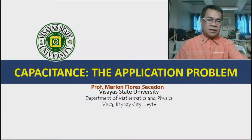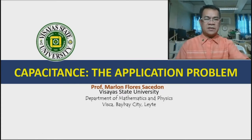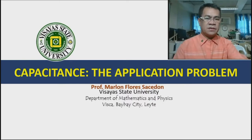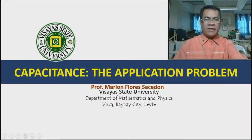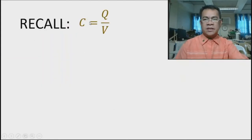Let us continue with the network of capacitance. This is a continuation of the previous video — this is video number three — and it is an application problem of the network of capacitors, finding the capacitance, the charge, and the equivalent voltages. Recall that C is equal to Q over V; the capacitance is the charge divided by the potential difference.